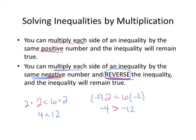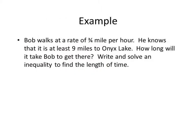That really is the only difference between solving an equation and solving an inequality. So: Bob walks at a rate of 3 fourths of a mile per hour. He knows that it is at least 9 miles to Onks Lake. How long will it take Bob to get there? Write and solve an inequality to find the length of time.